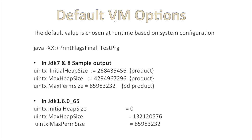To see what the default JVM options are, always use the flag -XX:+PrintFlagsFinal followed by the name of the program. This will give a list of all available configuration values used by the JVM. Some of the key available options include the initial heap size.